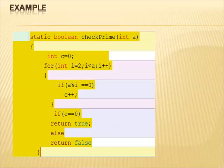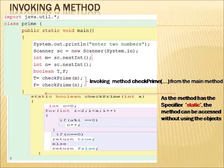We can see that only one termination point will be executed at a time — whenever c equals the condition. Now let's see how we can invoke or call a method from the main method. Every Java program has a main method, and we can call that checkPrime method from the main method.